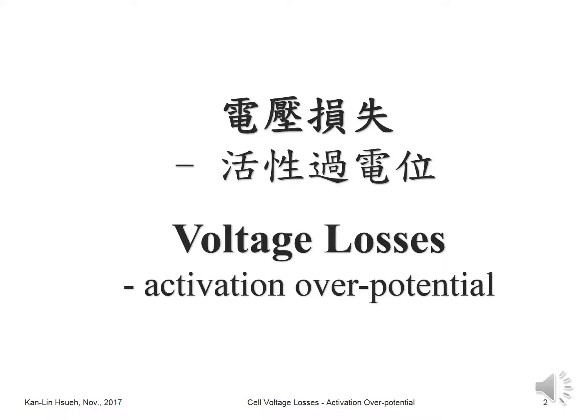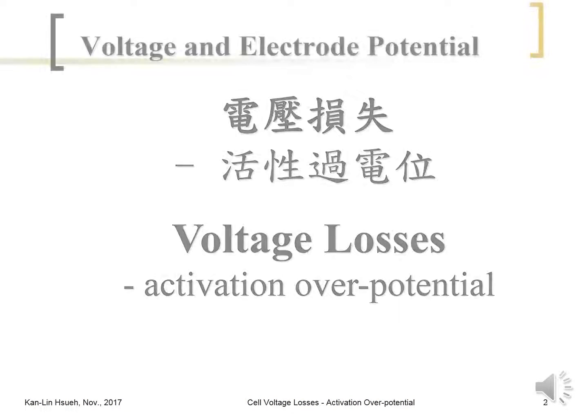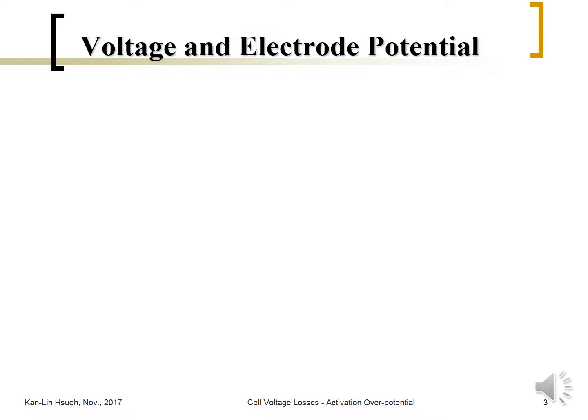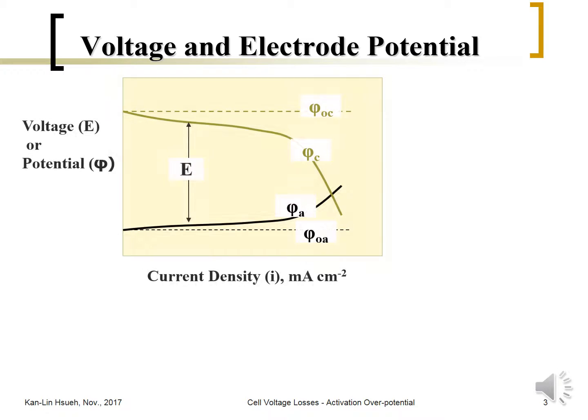Activation overpotential may occur because of low surface area, a poisoned catalyst, or use of a less active electrode. If you want to reach a certain amount of current, the voltage loss is much larger due to the electrokinetic activity. Before discussing that, let's refresh what electrode potential means.